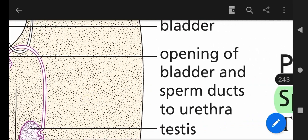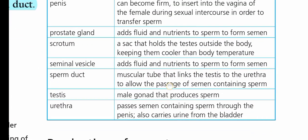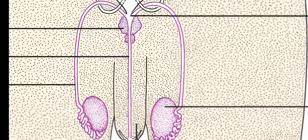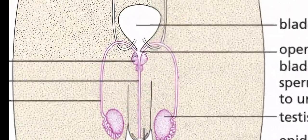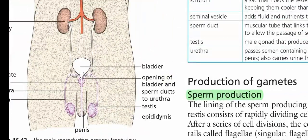The sperm duct is used for sperm transport — it is a muscular tube that links the testis to the urethra to allow the passage of semen containing sperm. The seminal vesicle and the prostate gland add liquid medium and nourishment — including carbohydrates and many other nutrients — to the sperm. After this, sperms are transformed into semen, which is a viscous liquid form containing the nutrients provided by these glands. One gland missing from the table is the bulbourethral gland.